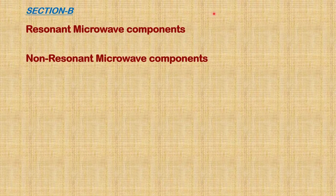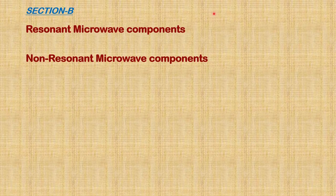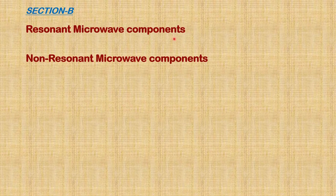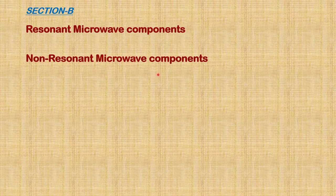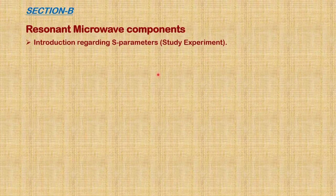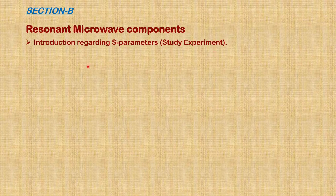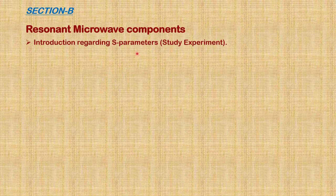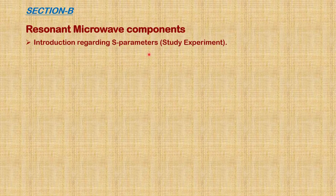Section B is divided into two parts: resonant microwave components and non-resonant microwave components. In resonant microwave components, we start with a study experiment, an introduction regarding S-parameters. Here we learn what an S-parameter is, how to represent it, and how to find the values.